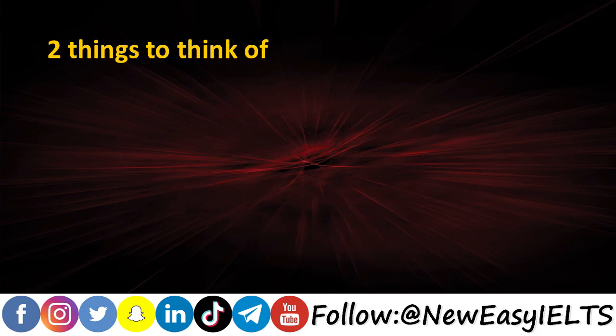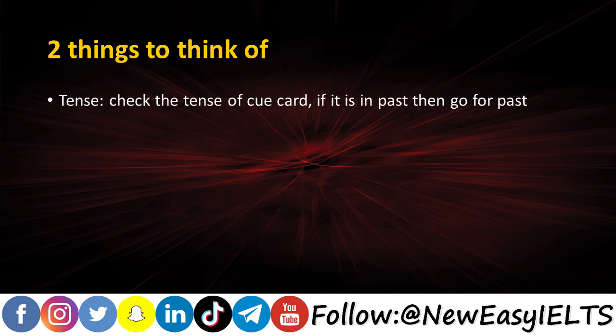Before starting, there are two things you should think of. First is tense — as always, you should check the tense of your cue card. If it is in the past then you should use past tense, or vice versa for present and future. In this case it should be past tense because it asks you to describe an important journey that was delayed, so you have to describe past things.